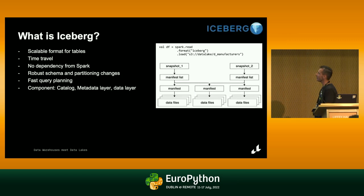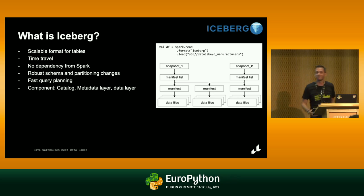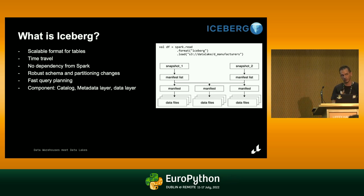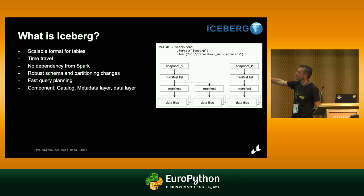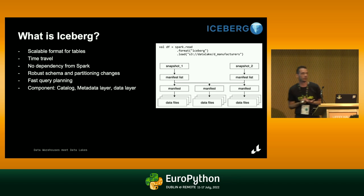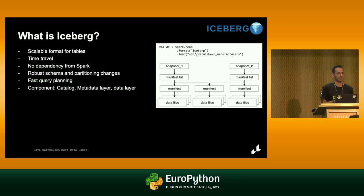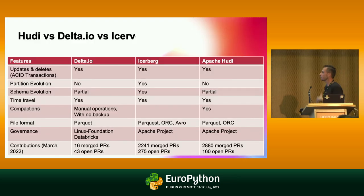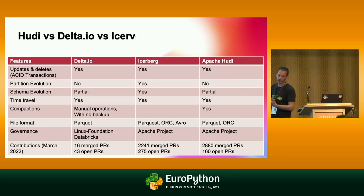Apache Iceberg is another good technology. One key point: it has no dependency on Spark, so you can use other processing engines. I'll recap the main differences in one slide — you can watch it if you want.